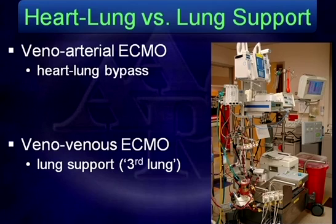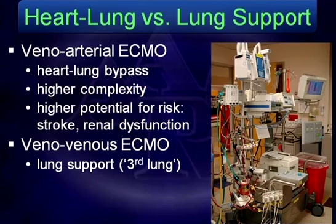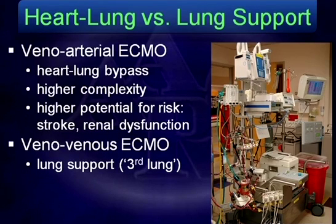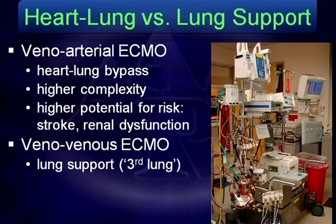Let's take this to the next level and talk about it in more detail, because it's really important to understand why you would distinguish between both. Veno-arterial ECMO removes blood from the right side of the circulation, oxygenates and ventilates the blood, and returns it to the left side of the circulation. Because we're entering the left side of the circulation, there is risk of cerebral embolus — whether that be clot or air. This requires a full-service VA ECMO pump that is very complex, and there is a higher potential for stroke with embolus, as well as renal dysfunction, because the blood flow from this pump is non-pulsatile compared to the heart. Some believe that non-pulsatile flow can lead to renal dysfunction.